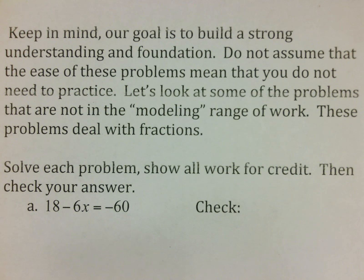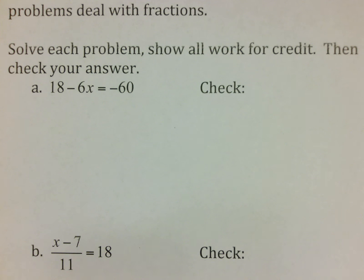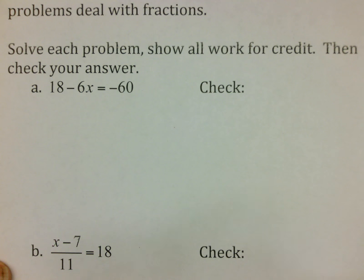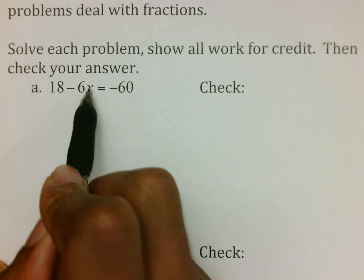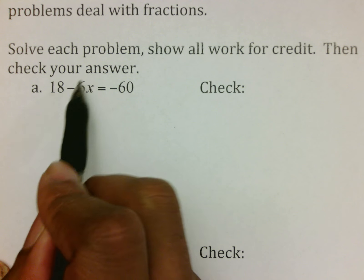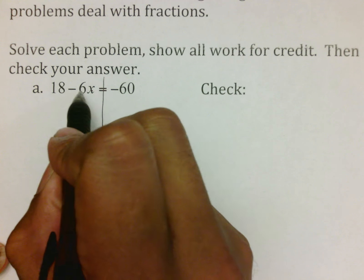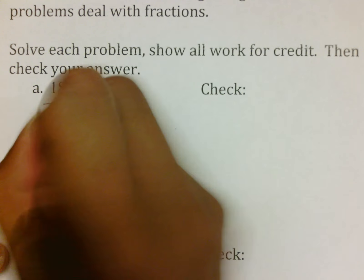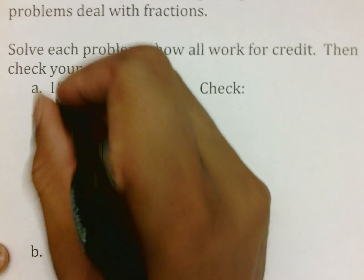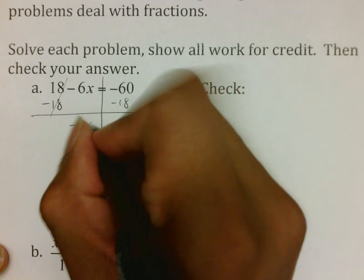We're going to look at some problems that are not in the modeling range — these are ones that are formally solved and checked, which will also be on your computer. Now that you have two steps you're going to have three lines worth of check to show on the computer. So: eighteen minus six X equals negative sixty. Remember that our job is to get to X. What I usually see it as is working from the outside in — the closest number to X is the six, so we'll save that for last. We want to move the eighteen first by subtracting eighteen from both sides.